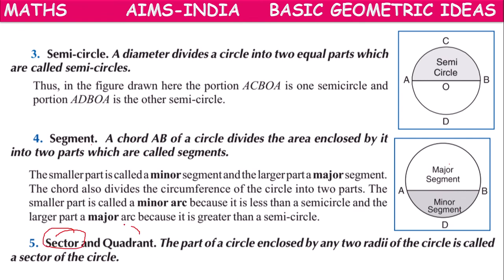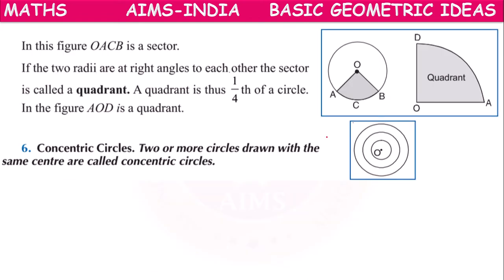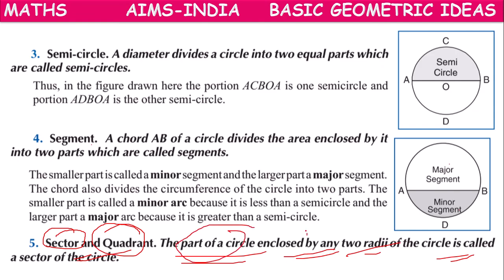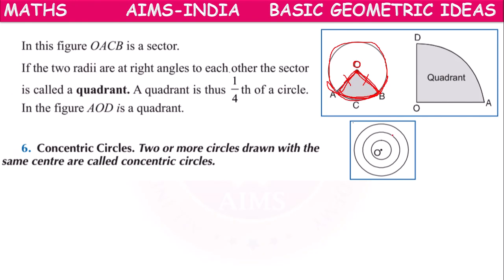Next we have sector and quadrant. The part of a circle enclosed by any two radii and one arc is called a sector. In the diagram, OA is one radius and OB is another radius. The area OACB enclosed by these two radii is called a sector of the circle.